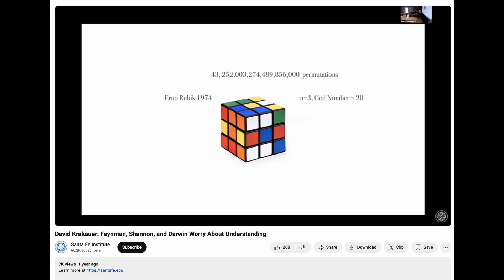It turns out that this cube has something called a god number, which is the maximum number of twists or generators of a group that are necessary to be implemented starting from the worst possible initial condition.